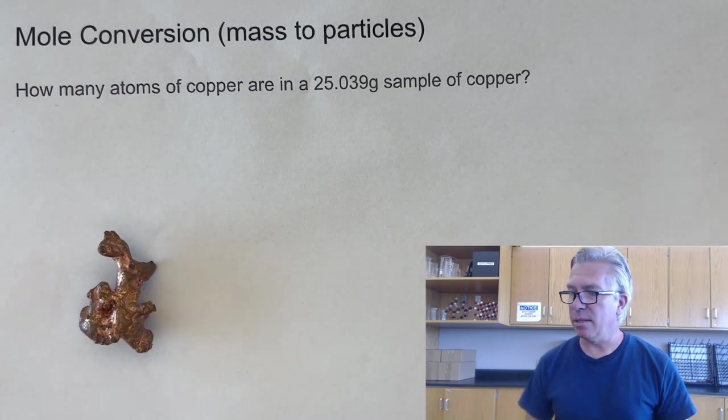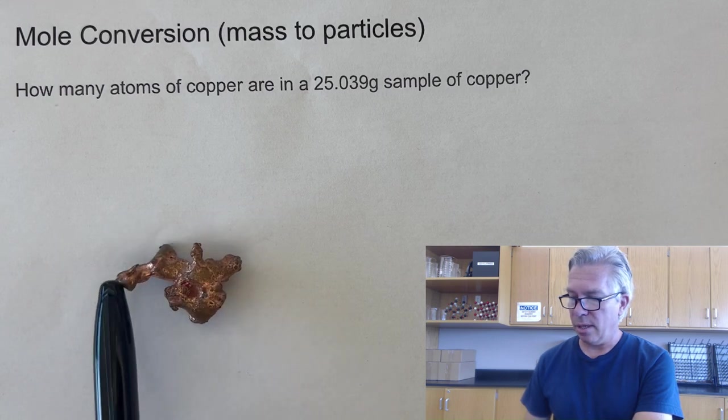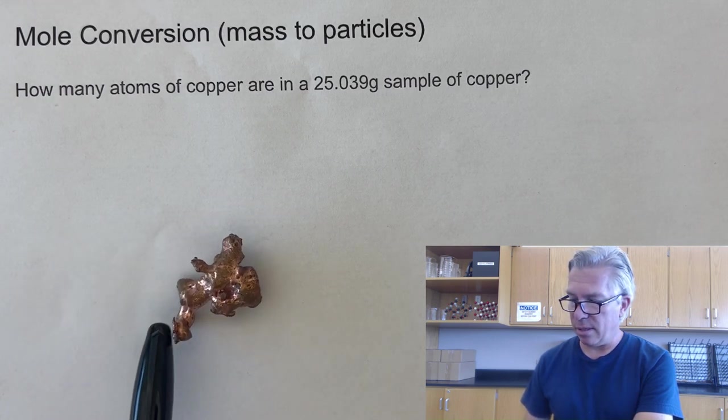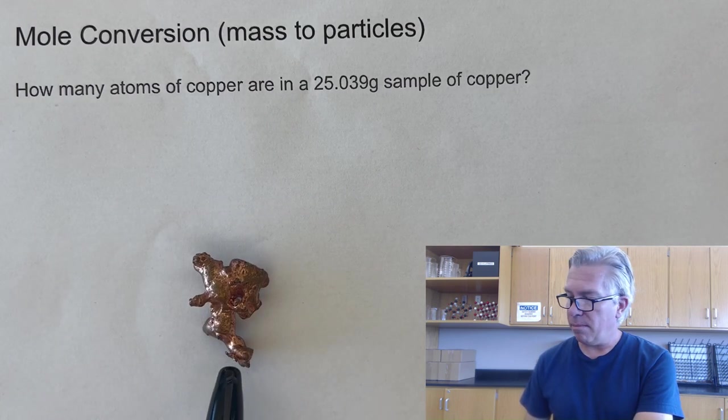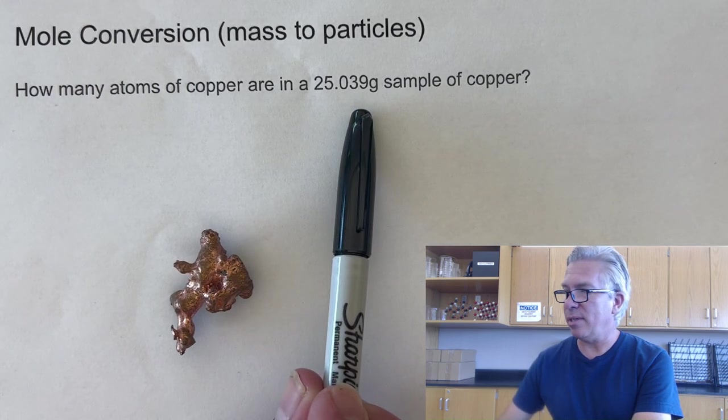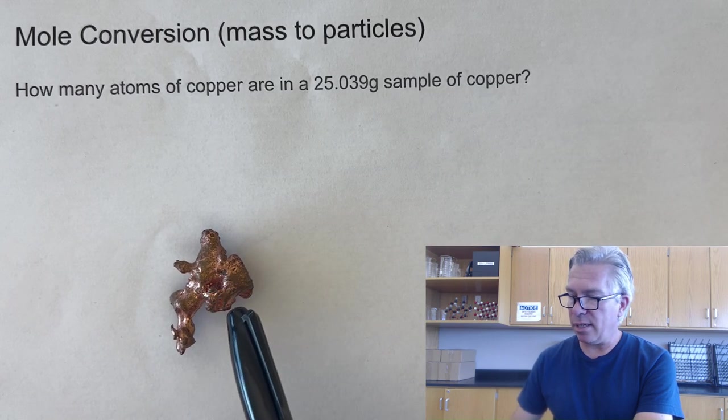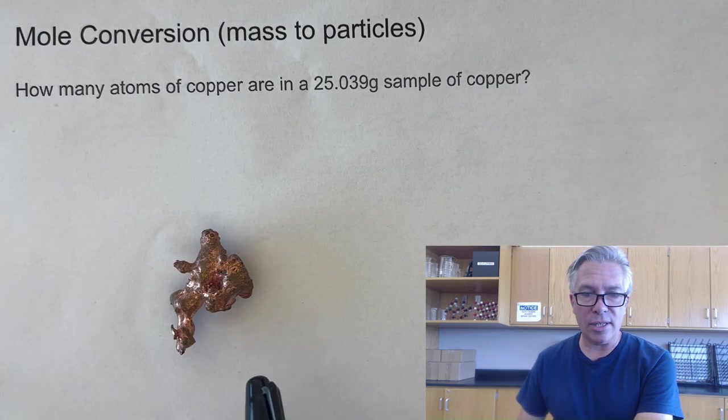I actually have a sample of copper here, and you can see that it has the coppery color. It's kind of knobby looking, weird, irregularly shaped nugget that I have here. But I actually went and put it on the balance, and I found out that it weighs 25.039 grams, and that's copper. So what if I was interested in how many atoms of copper were actually in this thing?